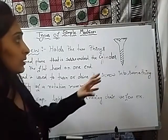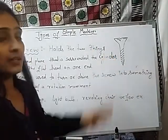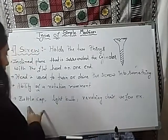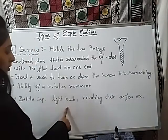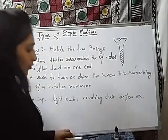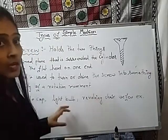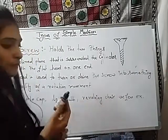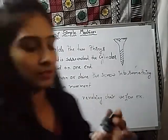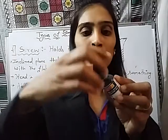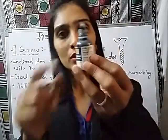For example, a bottle cap, a light bulb, and a revolving chair are a few examples of the screw. If we consider the example of this ink bottle, you can see certain notches here.